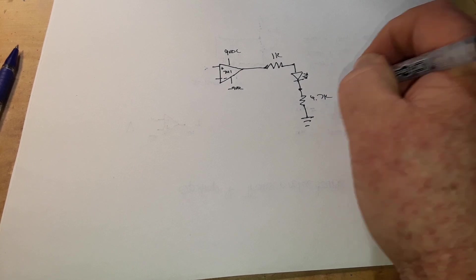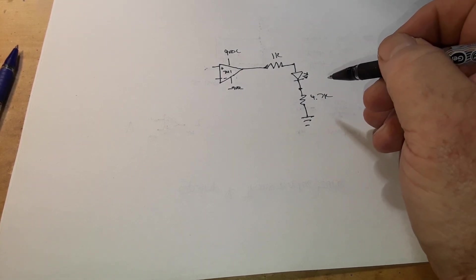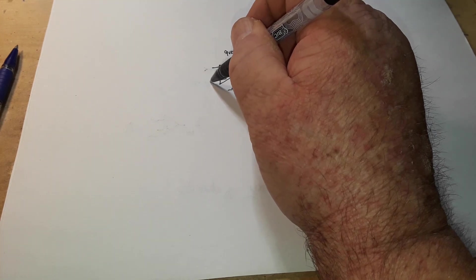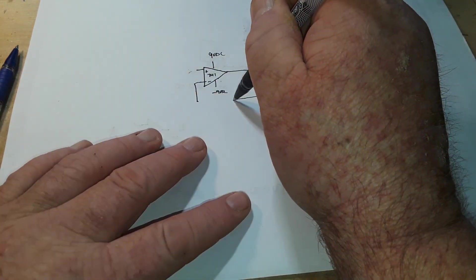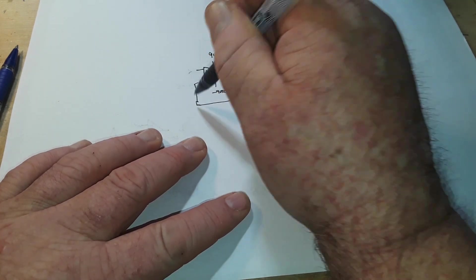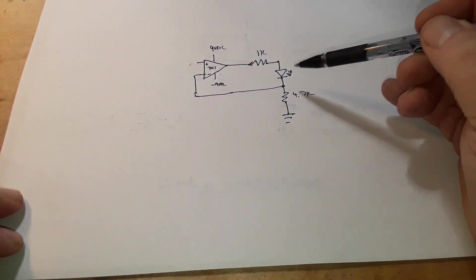And then of course our LED will go to ground, 4.7k. And now of course we take our inverting input like I showed you in the other drawing and we put it there.